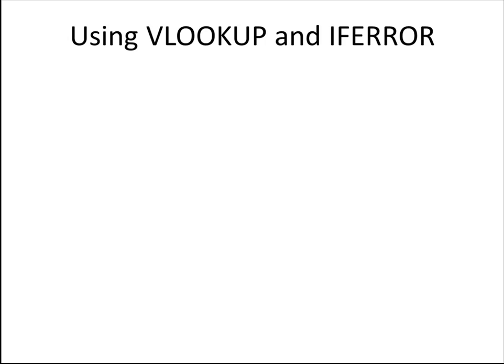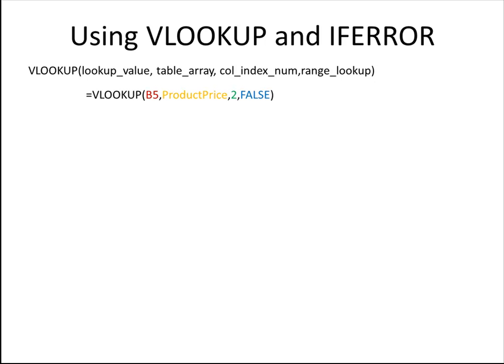In this tutorial, we use two functions: one called VLOOKUP and one called IFERROR. VLOOKUP is used to look up data from a table according to what column and row it's in. In our case, we're using VLOOKUP to look up a product price.